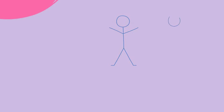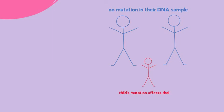If the mutation came from the egg or sperm cells, the parents still do not develop symptoms because their DNA sample does not show a mutation anywhere other than their reproductive cells. However, the child's mutation will affect their entire body in de novo mutation inheritance.